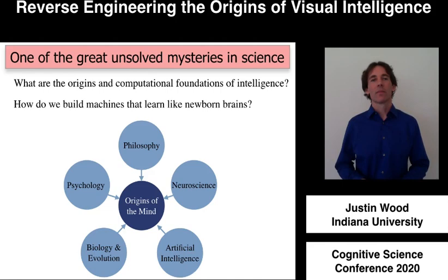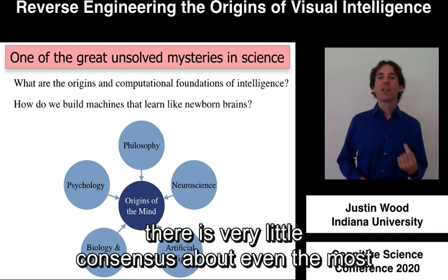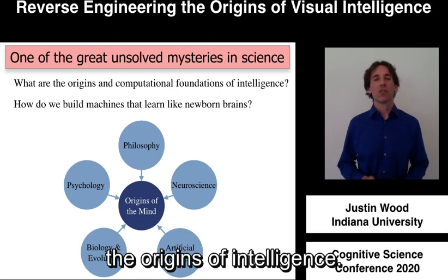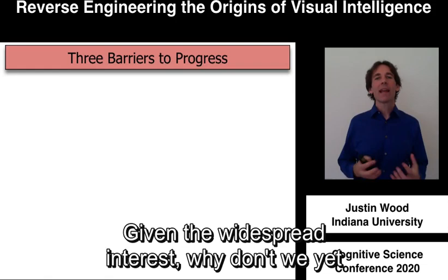However, despite widespread interest in this topic, there is very little consensus about even the most fundamental questions concerning the origins of intelligence. Given the widespread interest, why don't we yet have a strong theoretical understanding about such an important question?